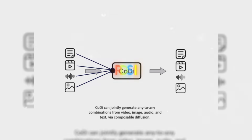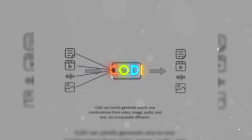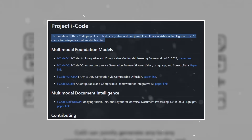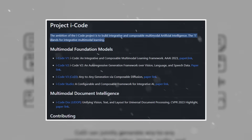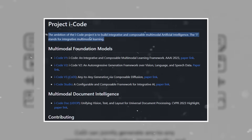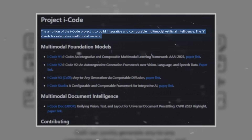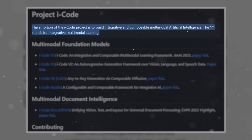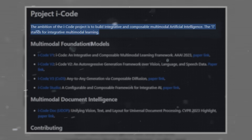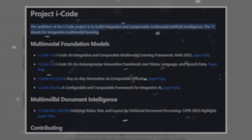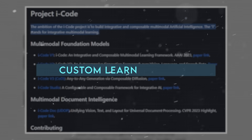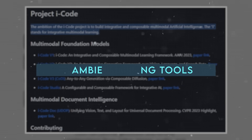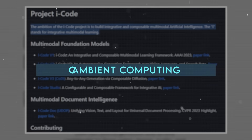CODI is the latest work of Microsoft's Project iCode, which aims to develop integrative and composable multimodal AI. It's a groundbreaking achievement that could transform the way humans interact with computers on various tasks, including assistive technology, custom learning tools, ambient computing, and content generation.